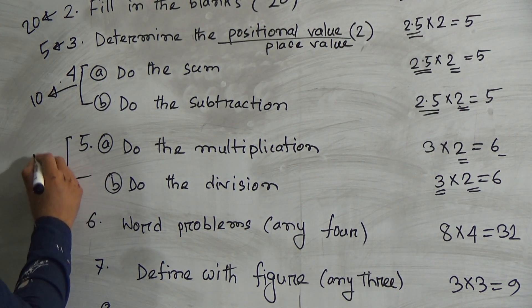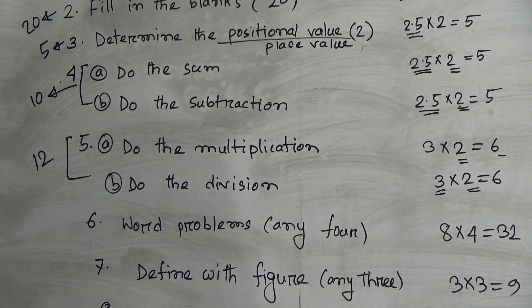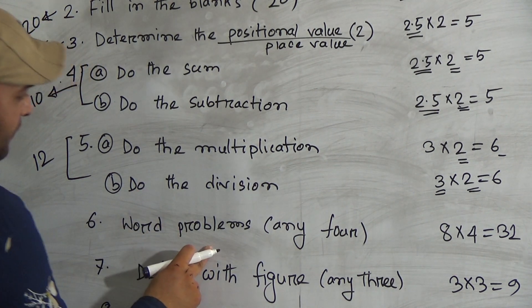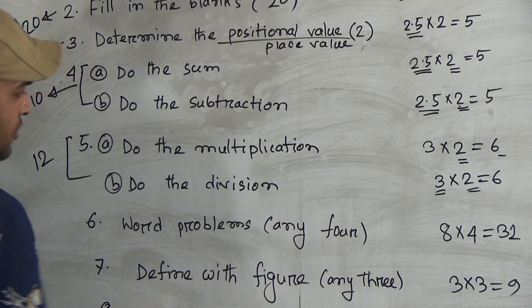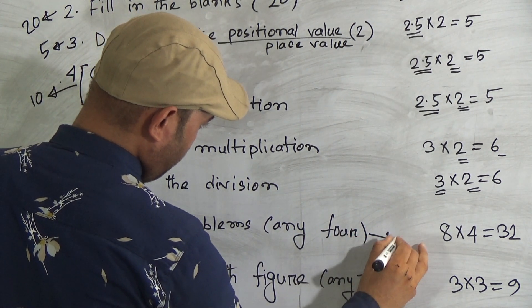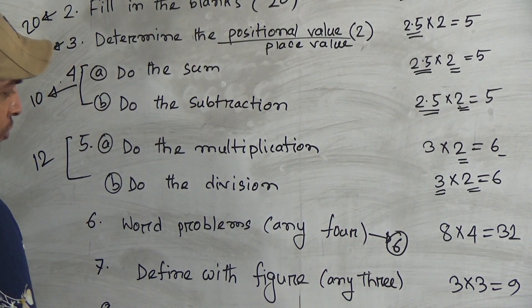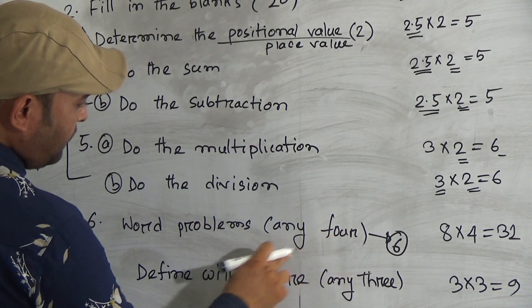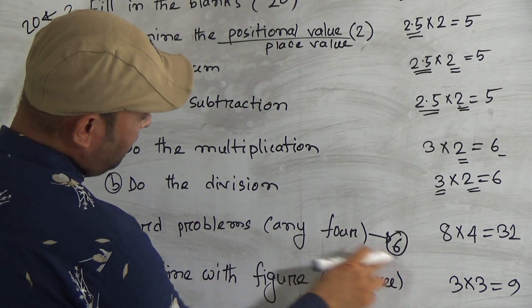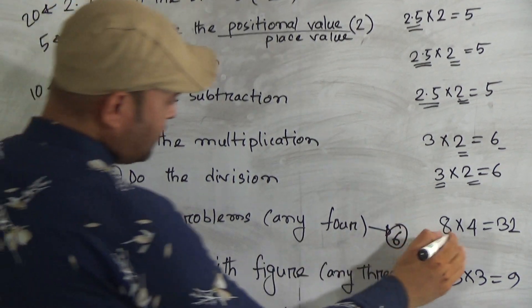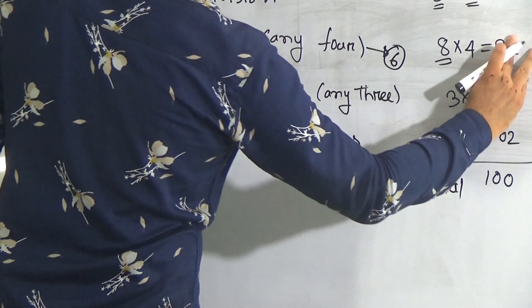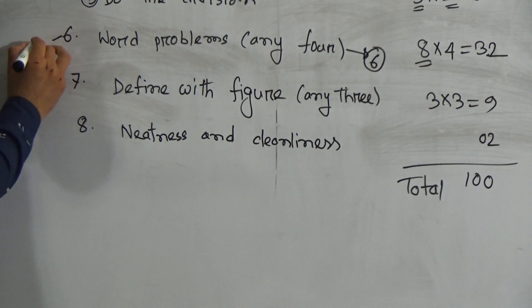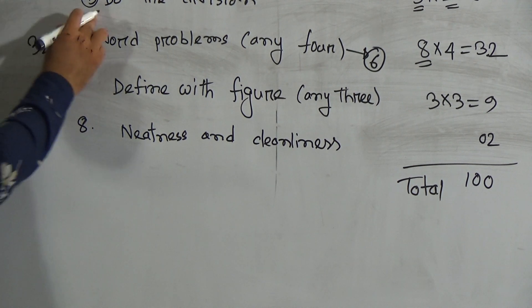Question number six is word problems. In the question paper you will get six word problems, and from six you have to answer four questions. Each question contains eight marks, so four eights are thirty-two marks. In question number six, there are thirty-two marks.